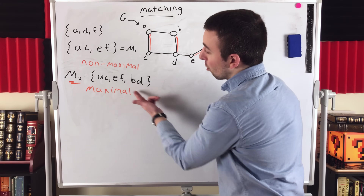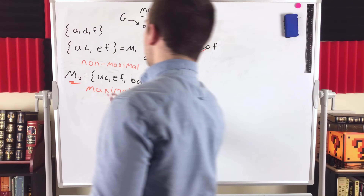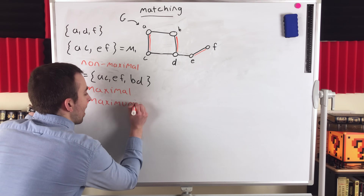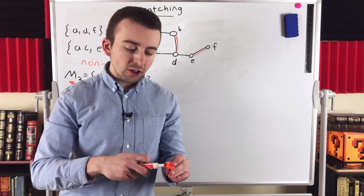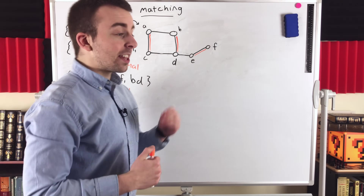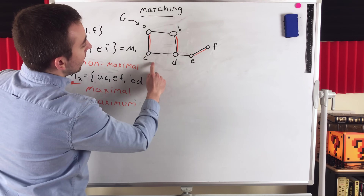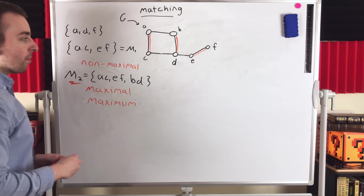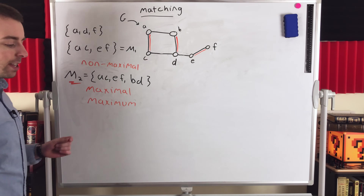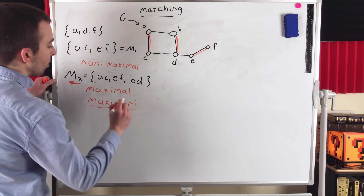As it turns out, this matching M2 is also a maximum matching in our graph G, which means there's no other matching in the graph that has more edges than M2. There is another matching with the same number of edges — if we put AB, CD, and EF in a matching, that's another matching with three edges. But there is no matching in G that has more edges than M2, so M2 is called a maximum matching.